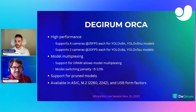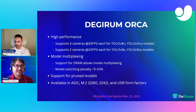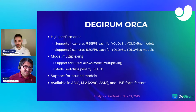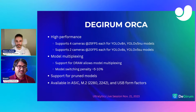On the hardware side, in terms everyone can understand: Orca supports about four cameras for YOLOv8n and YOLOv5nu-type models, and about two cameras for YOLOv8s and YOLOv5su-type models. You can run multiple models simultaneously with very low switching penalty. We have support for pruned models and the hardware is available in ASIC, M.2, and USB form factors.